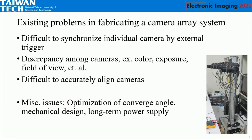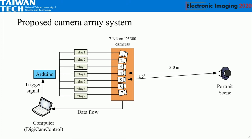Other issues include optimization of the convergence angle, mechanical design, and long-term power supply. This figure shows our scenario: one camera sends a trigger signal to an Arduino board, which then triggers seven relay circuits to trigger all cameras to take a photo simultaneously. After the images are taken, we use USB cables to download the photos. Each photo has a precise timestamp and a correct ID, so we can automatically process the photos.